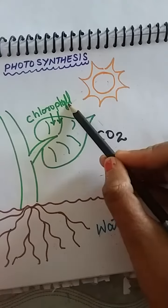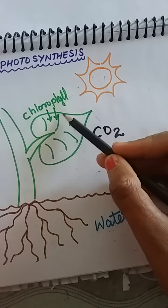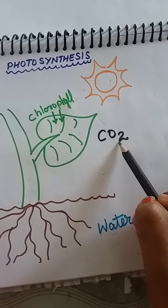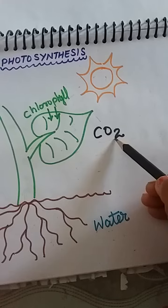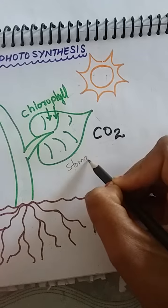Chlorophyll that is present in each leaf converts this light into energy, and carbon dioxide is present in the atmosphere which is absorbed by the stomata that is present in the leaf.